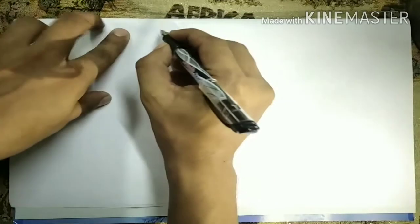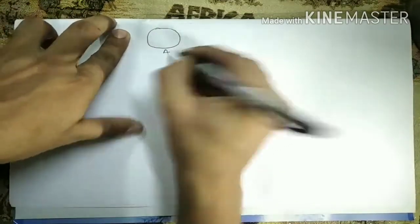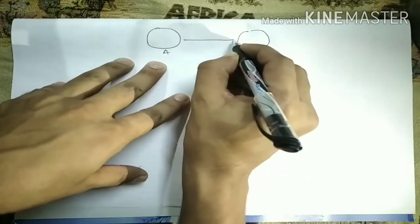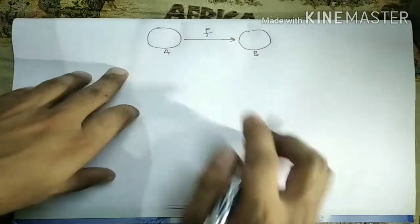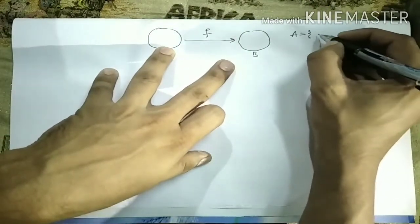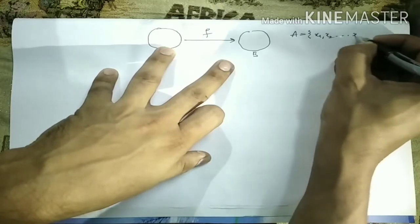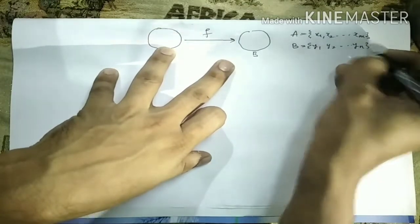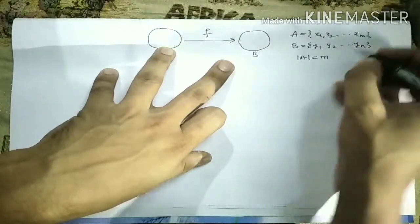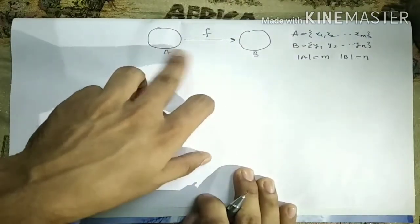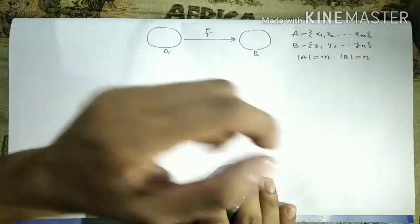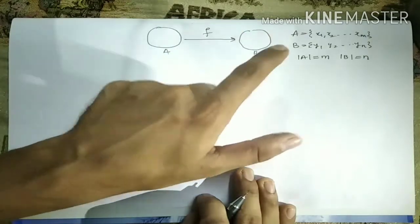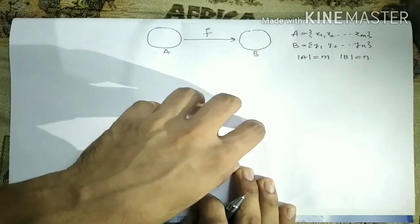So suppose I have two sets — set A and set B. A is the domain and B is the codomain, and I have defined one function from set A to set B. Suppose there are M elements x1, x2, up to xM in A, and N elements y1, y2, up to yN in B. So cardinality of A is M and cardinality of B is N. I want to find out the number of functions from A to B — total, 1-1, onto, and bijective.